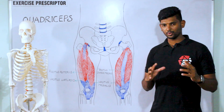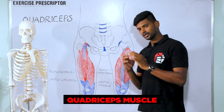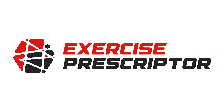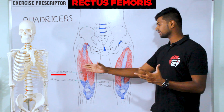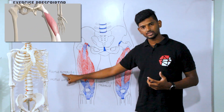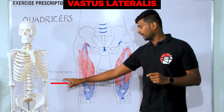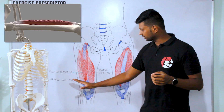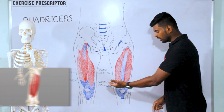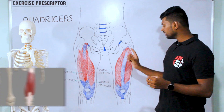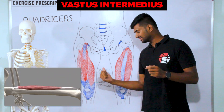Welcome to Exercise Prescriptor. Today we are going to learn about the quadriceps muscle, which is a group of four muscles presented over the anterior portion of the thigh. We'll understand the naming of each muscle: rectus femoris means 'straight', running vertically over the femoral region. Vastus lateralis — 'vastus' means greater or big, and 'lateralis' means situated on the lateral aspect of the thigh. Similarly, vastus medialis is on the medial portion, and vastus intermedius is situated between the lateralis and medialis.